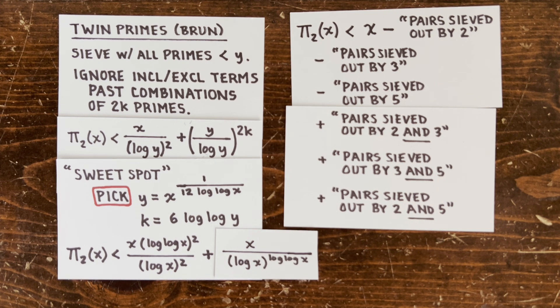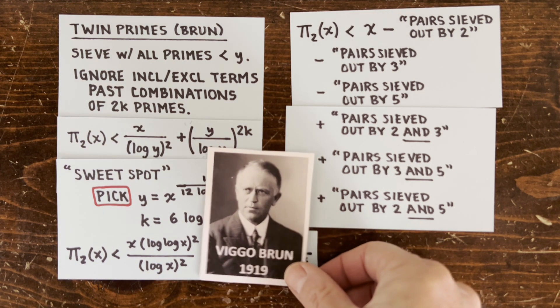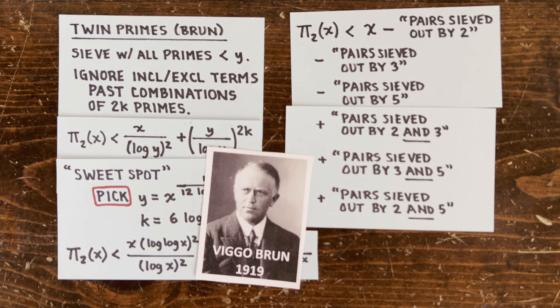Now he can say the number of twin primes less than x can't be more than this. And for large x, the error term is negligible. So that's it. Now with more time, we can fill in the details, but that's the outline.